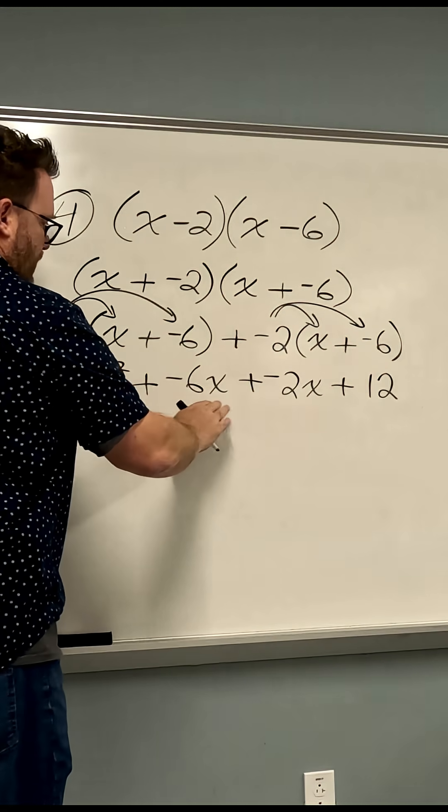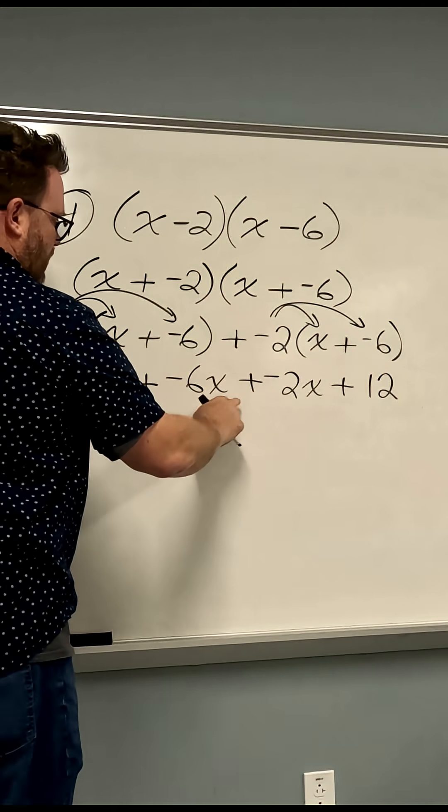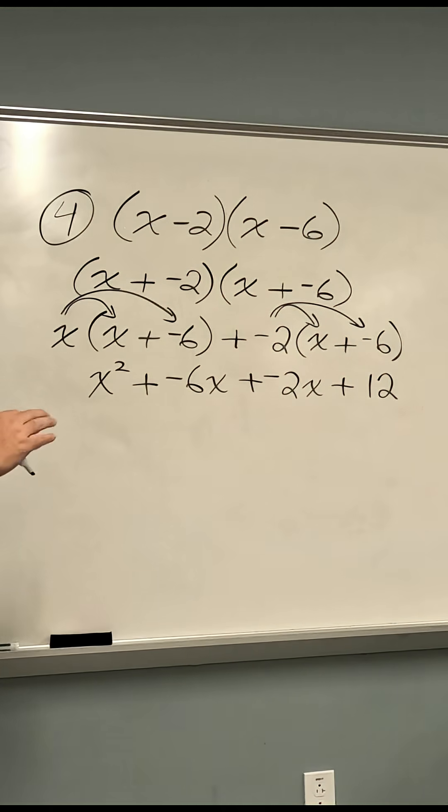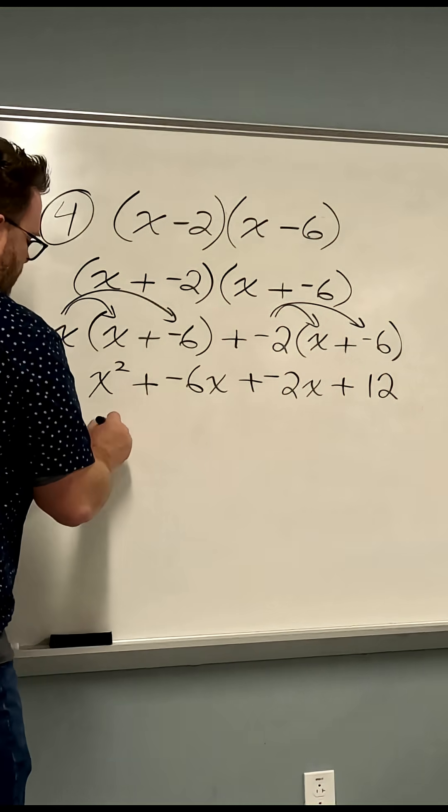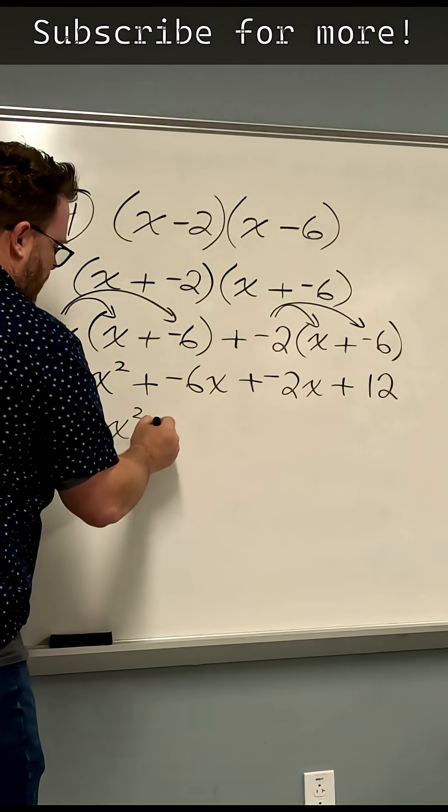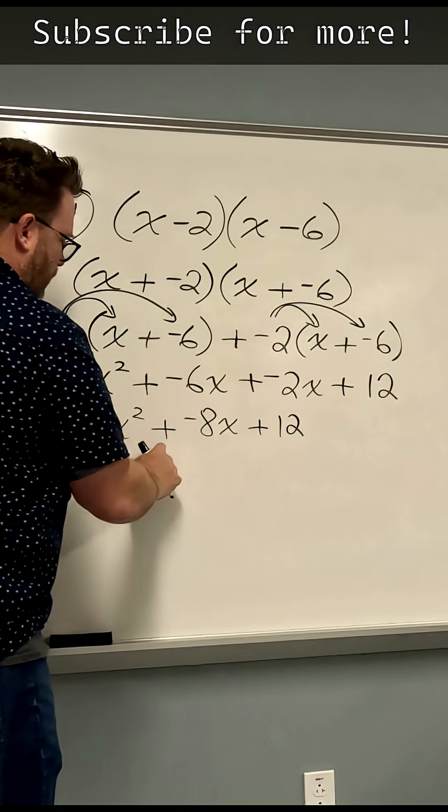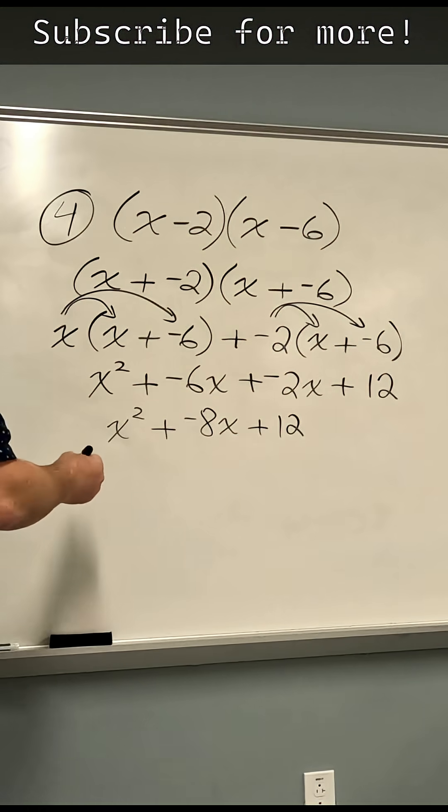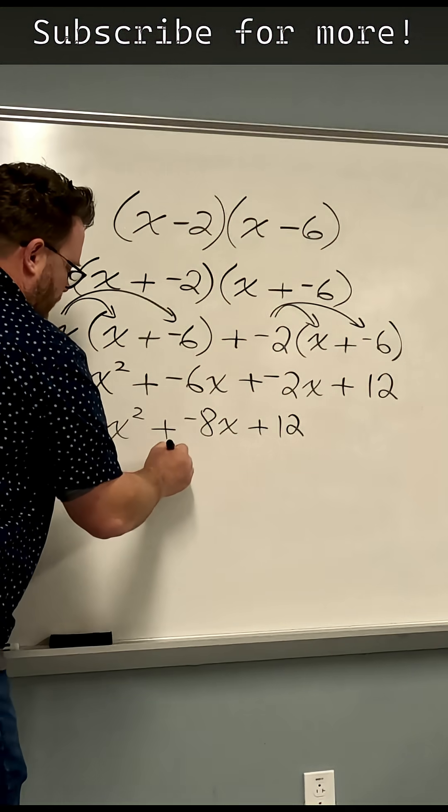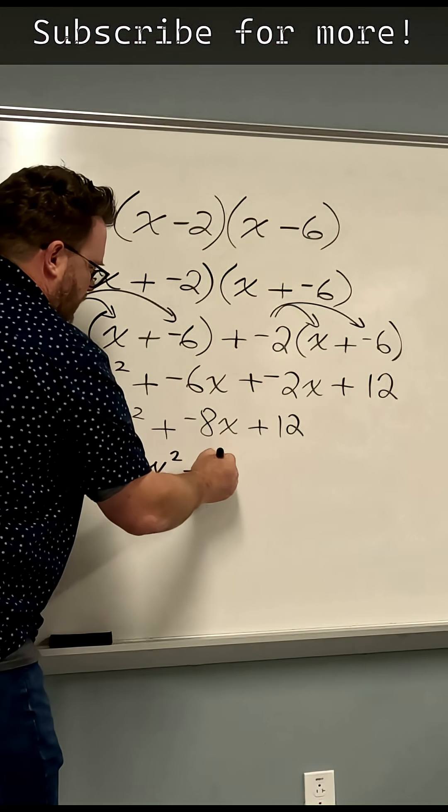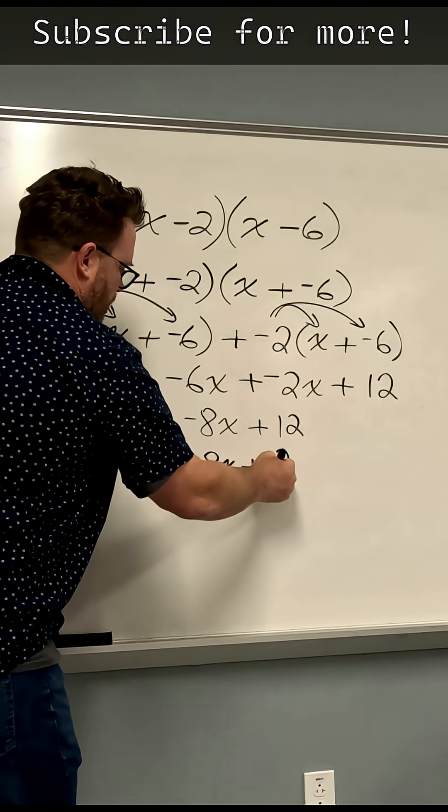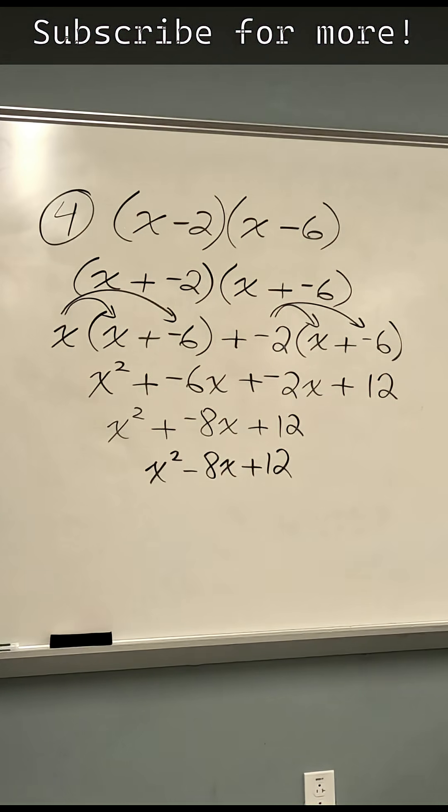So if I'm going to combine these two terms, when I add negative 6x to negative 2x, I get negative 8x. And so I could write x squared plus negative 8x plus 12. But when we add a negative, it's like subtracting the positive. So it looks nicer if I just write x squared minus 8x plus 12 as my solution to that problem.